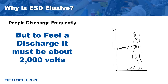When you feel a discharge of electricity, that ESD event is about 2000 volts or more. This shock — known as electrostatic discharge or ESD — is likely responsible for damaging many electronic components in your company. While you can feel electrostatic discharges of 2000 volts, smaller charges are below the threshold of human sensation. Unfortunately, these smaller events can and do damage electronic components.